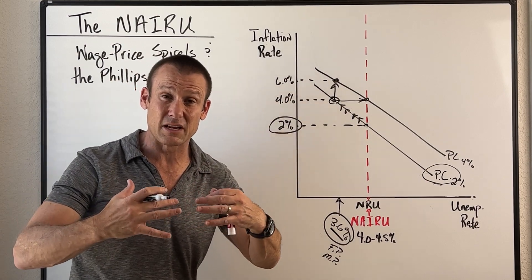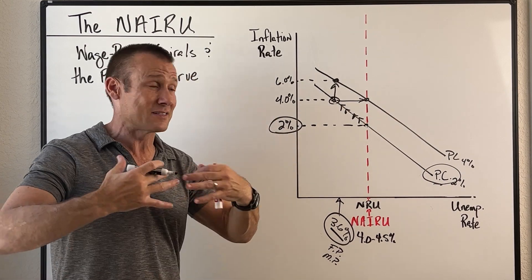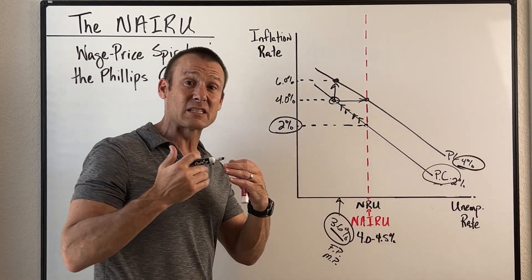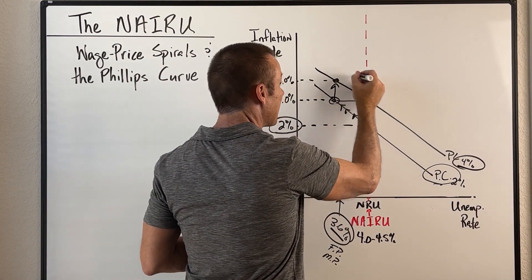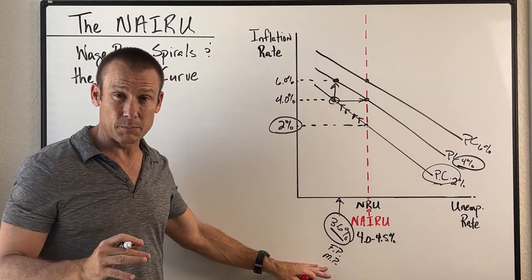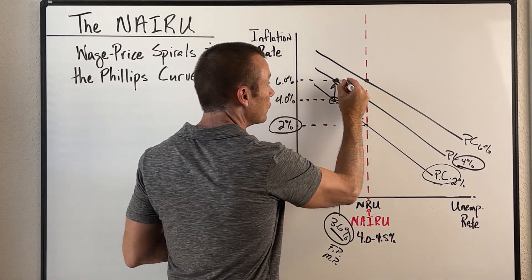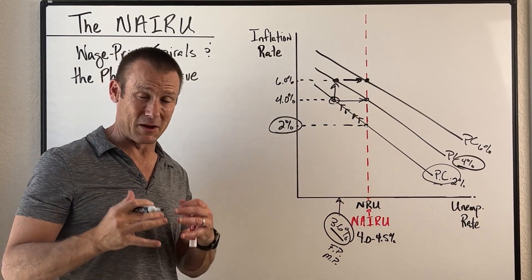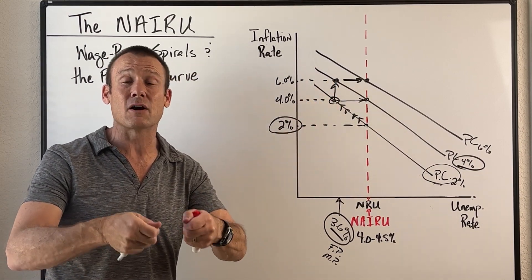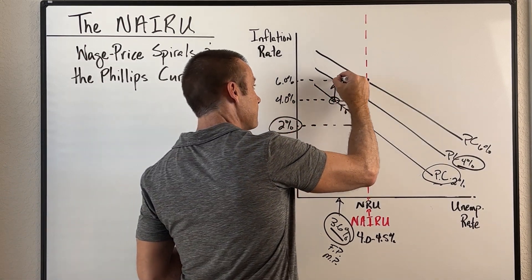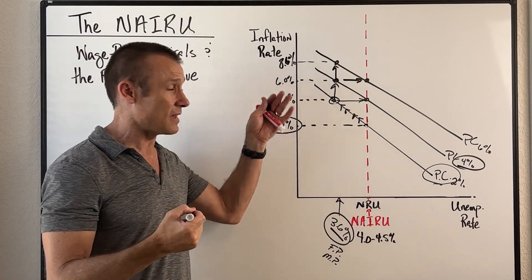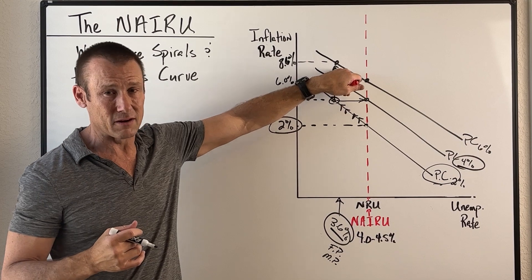On top of that, costs of production are going up because wages are a cost. So two things are putting upward pressure on prices: spending goes up, and cost of production goes up — both inflationary. And it's not just wage increases pushing us up the curve; expansionary fiscal and monetary policy is stimulative, so it pushes us up to 6.0 percent inflation. Workers then start agitating for wage increases of six percent, which means expected inflation is adjusting upward. We shift the Phillips curve again.